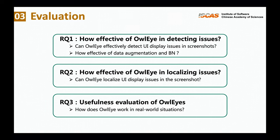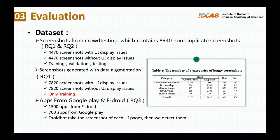I will now introduce our evaluation of All-Eyes. We have three research questions. The first: how effective is All-Eyes at detecting issues? The second: how effective is All-Eyes at localizing issues? And the third: what is the usefulness of All-Eyes? As shown in the table, the experimental dataset comes from two sources: screenshots from crowd testing, and screenshots generated by the data augmentation method.